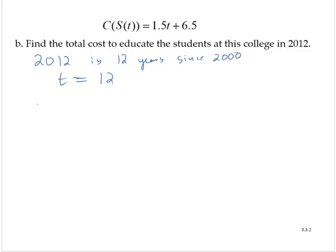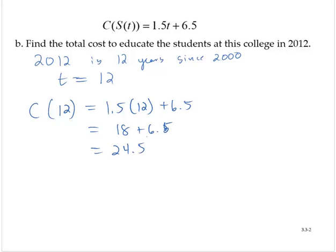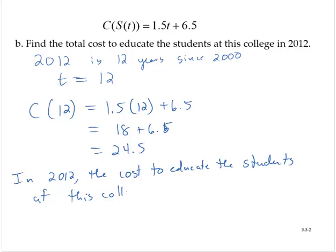Therefore the cost 12 years after 2000 would be 1.5 times 12 plus 6.5, and so that would be 18 plus 6.5 which is 24.5. So our conclusion for this part would be in 2012, the cost to educate the students at this college was 24.5 million dollars.